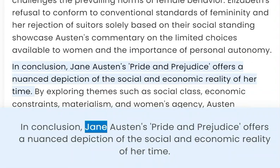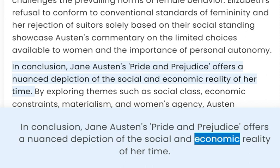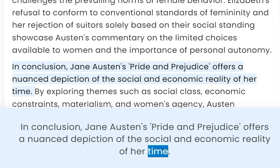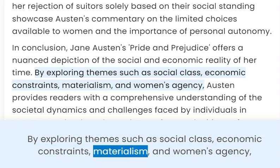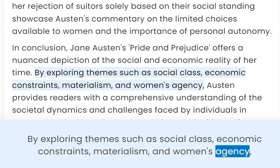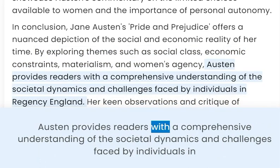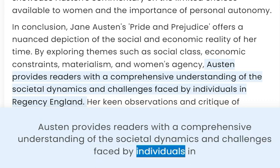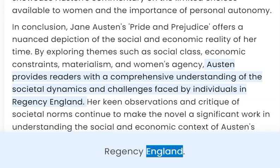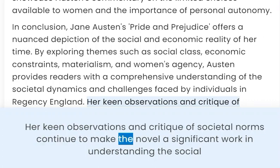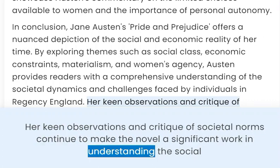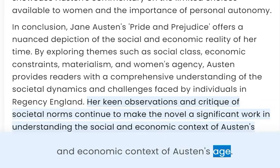In conclusion, Jane Austen's Pride and Prejudice offers a nuanced depiction of the social and economic reality of her time. By exploring themes such as social class, economic constraints, materialism, and women's agency, Austen provides readers with a comprehensive understanding of the societal dynamics and challenges faced by individuals in Regency England. Her keen observations and critique of societal norms continue to make the novel a significant work in understanding the social and economic context of Austen's age.